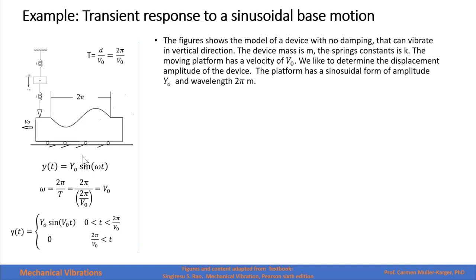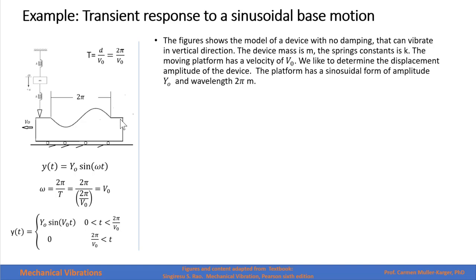Therefore, the frequency of that wave will be 2π over the period, which equals the velocity. The function that describes the motion of the platform is a sinusoidal function between zero and the period, but after that the function equals zero.